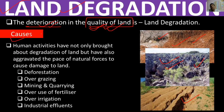There are several human activities that cause land degradation. The first is deforestation, the second is overgrazing, the third is mining, the fourth is overuse of fertilizers, and the fifth is over-irrigation.